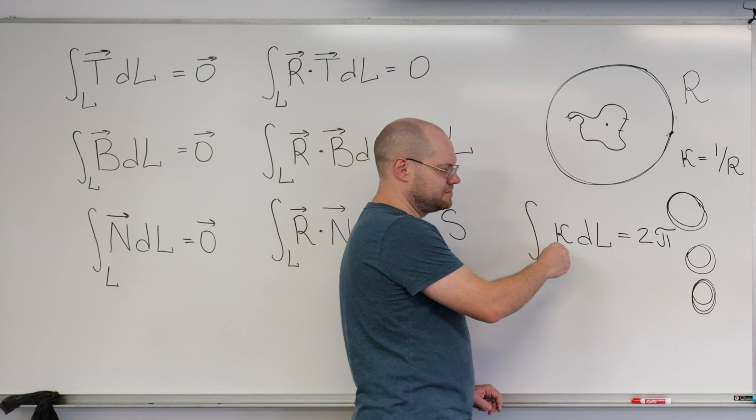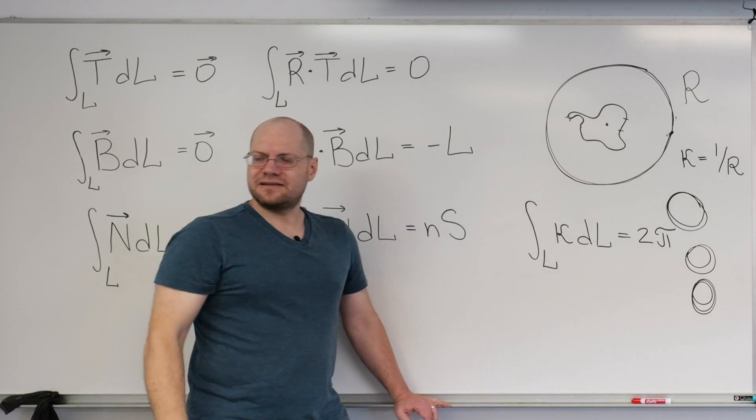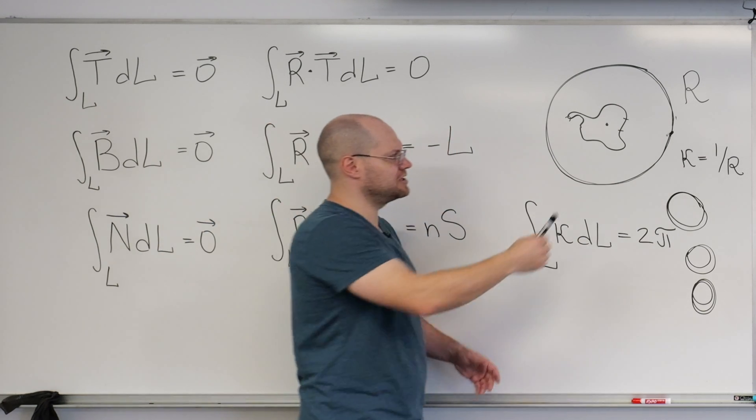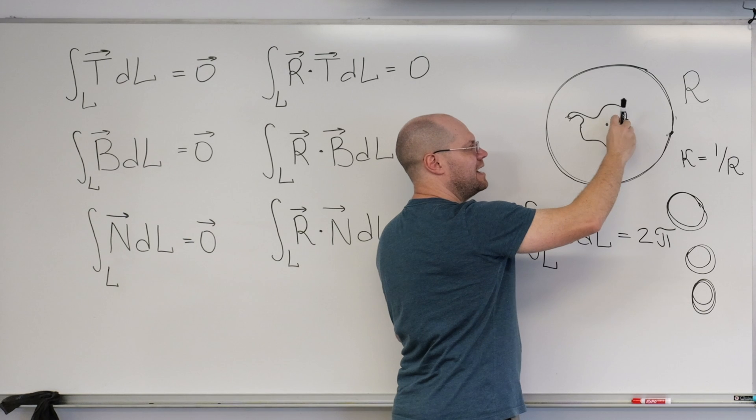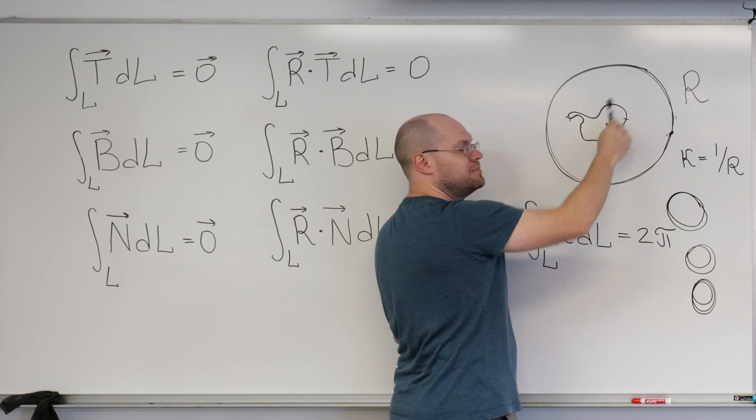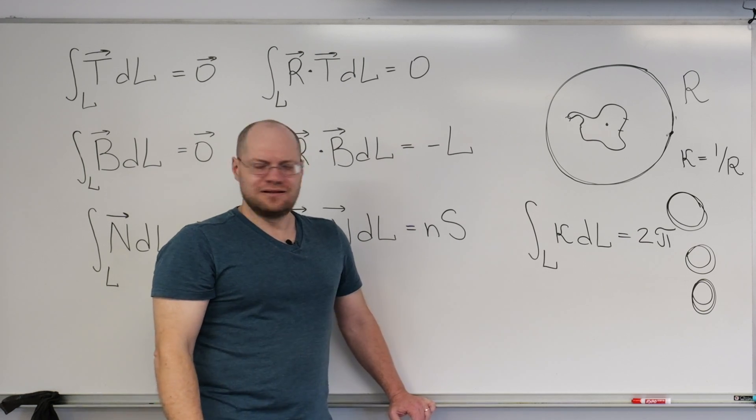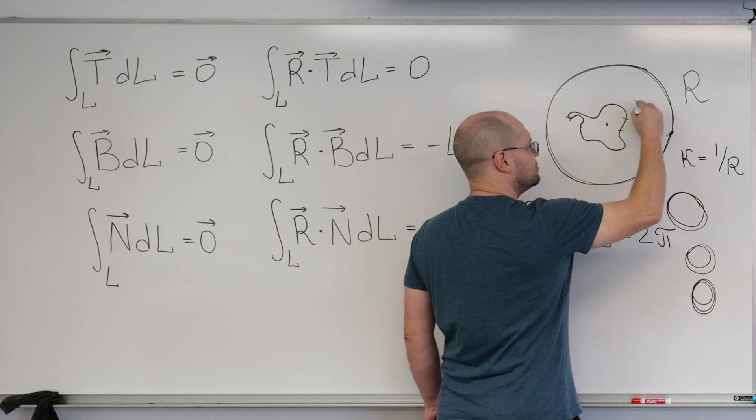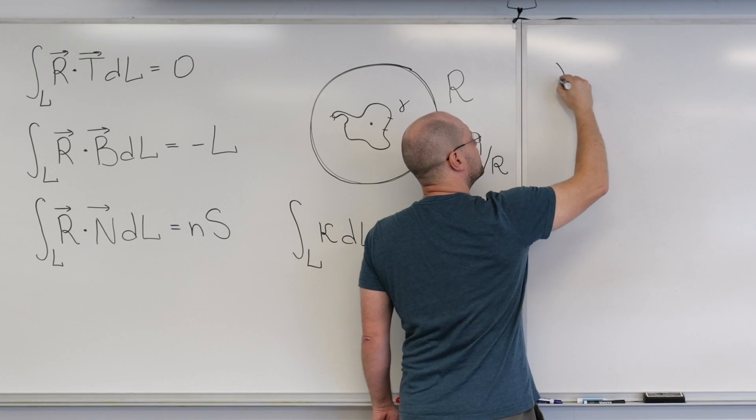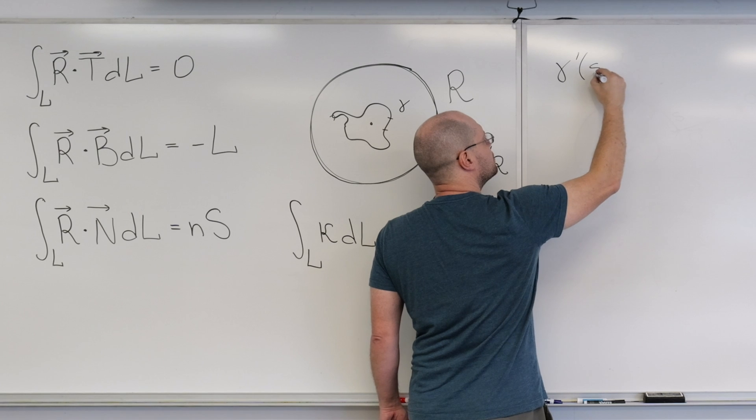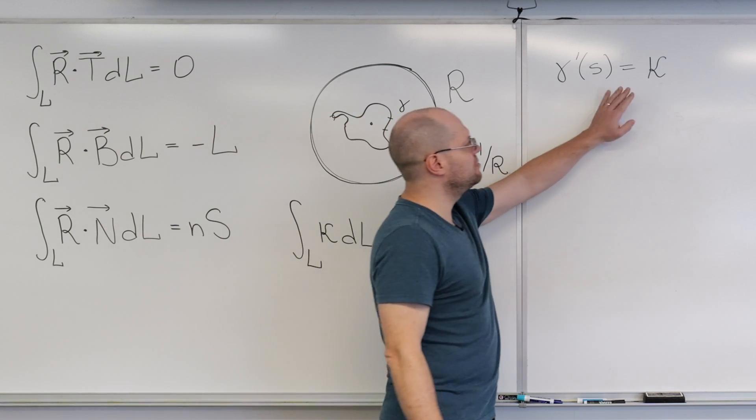What kappa is, is the derivative of the angle in which the curve points. And the direction of the curve is, of course, the direction of the tangent. And as the tangent goes around the curve with its changing arc length, its direction changes and its direction can be measured by the angle. And the derivative of that angle, if we call it gamma, I'll have to specify it a little bit more, but what we're going to prove is that the derivative of gamma is a function of arc length.